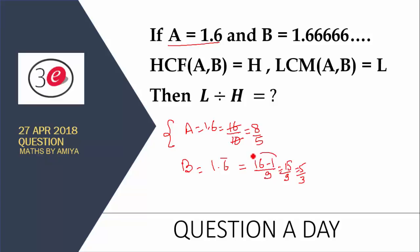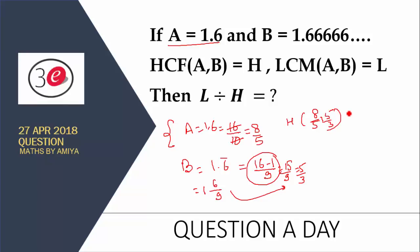The person who knows this method can use this method. So we have a = 8 by 5, b = 5 by 3. First of all we need to find the HCF of 8/5 and 5/3. If you are looking for the HCF, it means you have to find the HCF of the numerators and the LCM of the denominators. So it is 1 by 15.